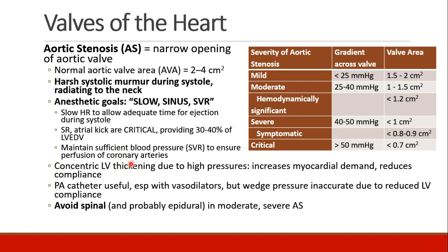SVR, or afterload, means to maintain sufficient blood pressure. This is primarily to ensure good perfusion of the coronary arteries, which occurs during diastole and occurs better with higher blood pressure. Patients who have aortic stenosis start to develop concentric thickening of their left ventricle due to the high pressures it's generating, which also increases myocardial demand for oxygen and reduces compliance. A pulmonary artery catheter may be useful in these patients, and they may benefit from vasodilators, though measuring pulmonary wedge pressures may be inaccurate because of their reduced left ventricular compliance.